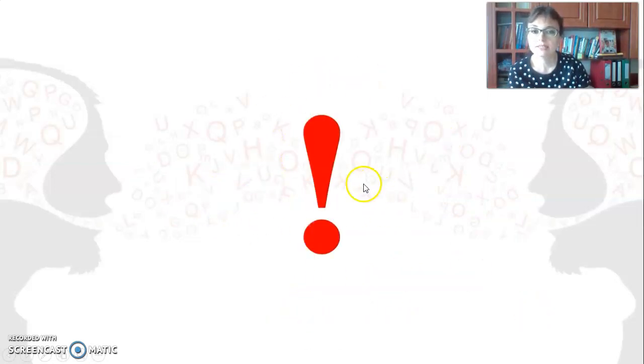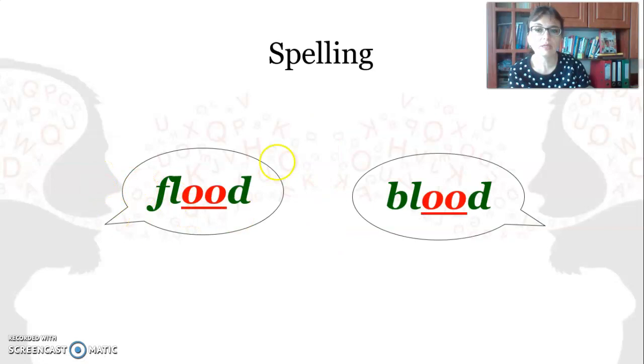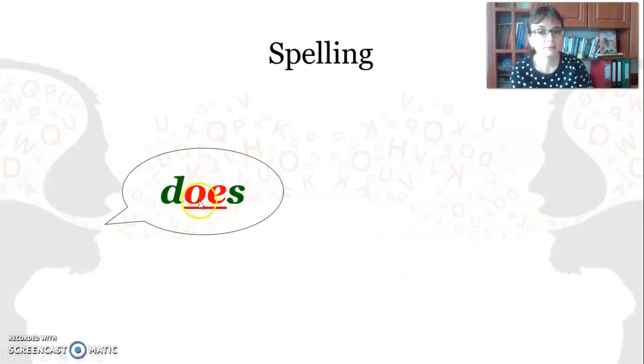And now let's see the exceptional cases of spelling with the help of double O as in flood and blood. And I'd like to draw your attention to these two words as from my experience learners tend to mispronounce them. So it's flood, blood, and with the help of OE as in does.